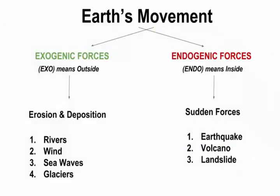Earth's movement is divided into two types of forces: exogenic forces and endogenic forces. By the name you can figure out — exo means outside, endo means inside. Exogenic forces include rivers, wind, sea waves, and glaciers. Endogenic forces are natural calamities like earthquakes, volcanoes, landslides, etc. Endogenic forces cause mass destruction, while exogenic forces are naturally occurring and don't cause as much destruction compared to endogenic forces.